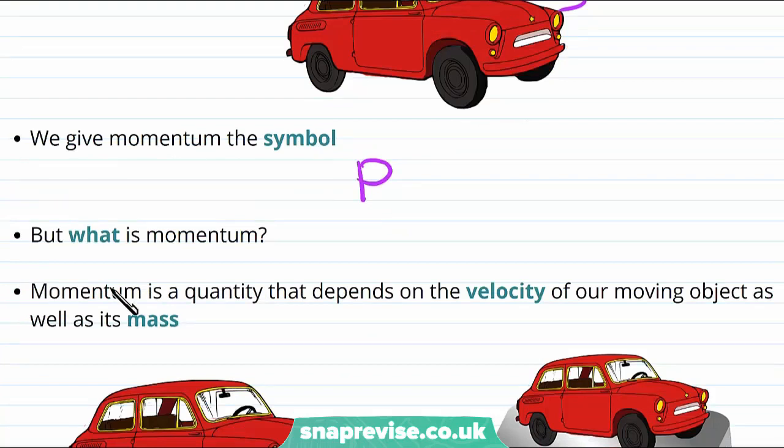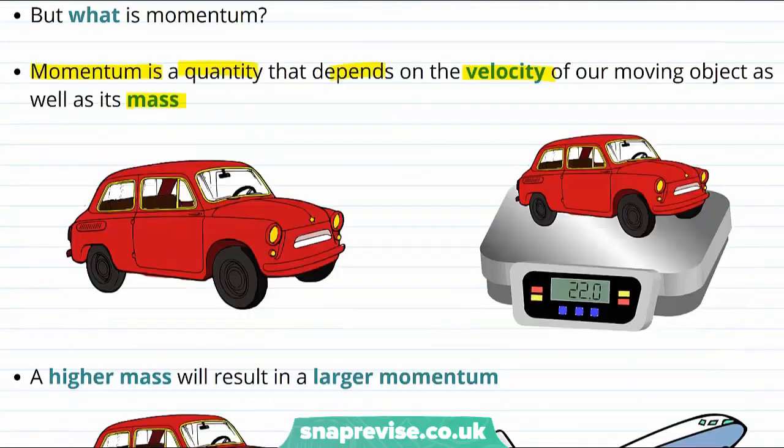Let's focus more now on what momentum actually is. Momentum is a quantity that depends on the velocity of our moving object as well as its mass. So the momentum depends on, for example, the speed of the car and what its mass is.